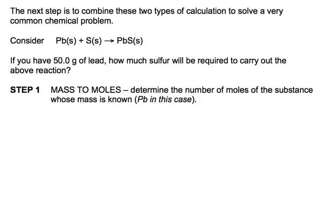Here's a question. Our balanced chemical equation is: lead plus sulfur yields lead sulfide. It's balanced as written — one mole of lead, one mole of sulfur, one mole of lead sulfide. The question is: if you have 50 grams of lead, how much sulfur in grams will be required to carry out the above reaction?